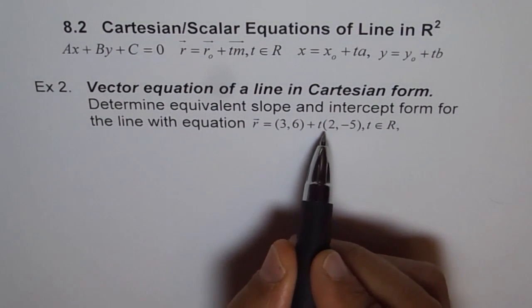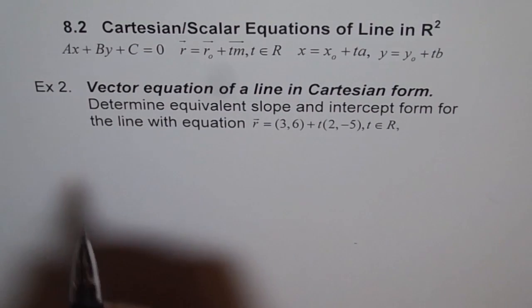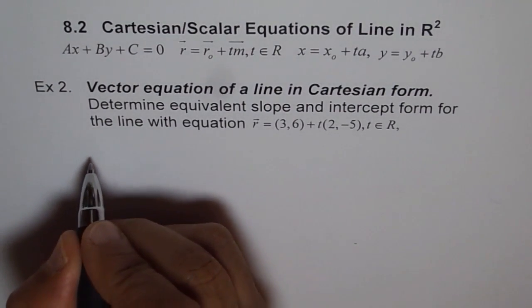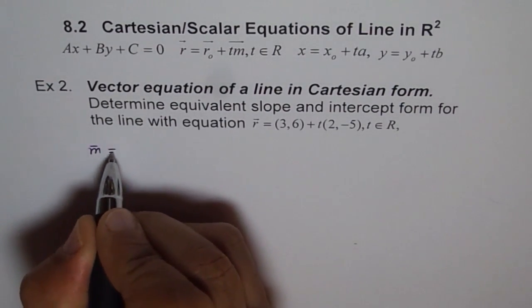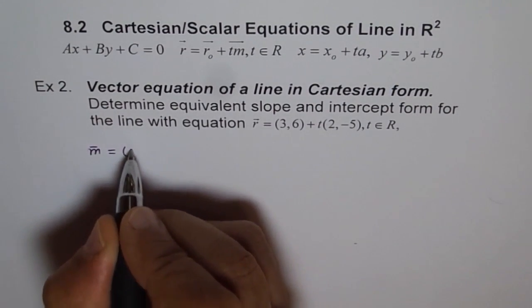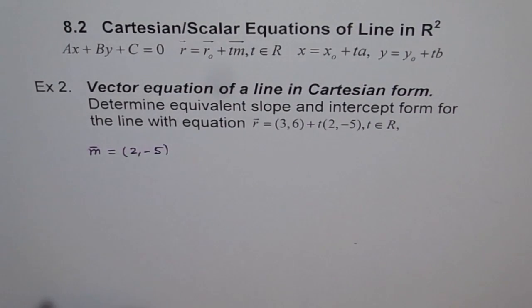Now here we know the direction vector, correct? So we have the direction vector which could be written as m is equals to (2,-5). So from the direction vector we can get the slope of the line, right?